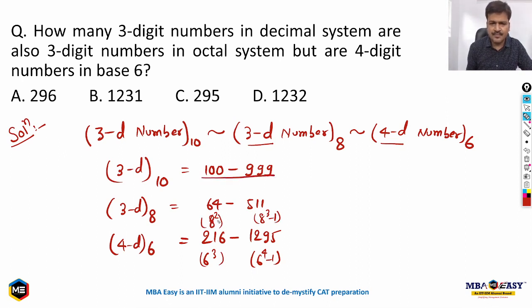My number has to be in this range, this range, and this range. Now think about it: can we start from 64? If we start from 64, it doesn't fall in this range, so we cannot begin with 64. The number has to be between 100 and 999, between 64 and 511, and also between 216 and 1295.